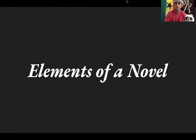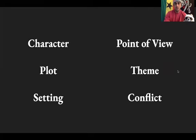Greetings my people. Today I'm going to talk to you about the elements of a novel. With me today is Professor Raccoon. There are six different elements that are contained within any story that you would read in any book, any movie, or any TV show. There are characters, a plot, a setting, point of view, theme, and conflict. Today I'm going to talk about each one of these to define them so you can get a sense of how they apply in stories that we read.